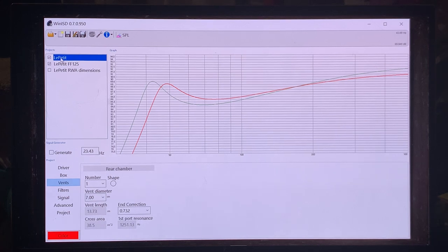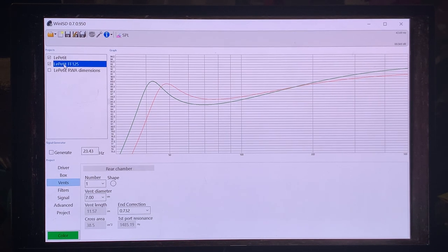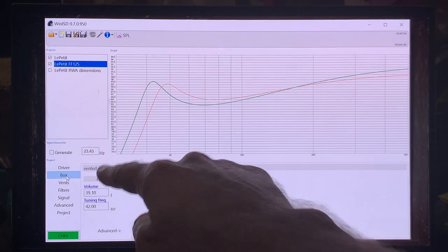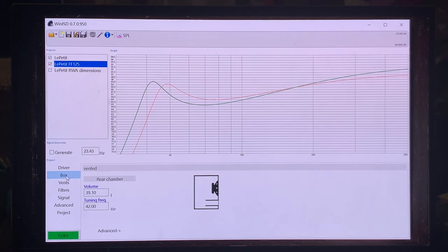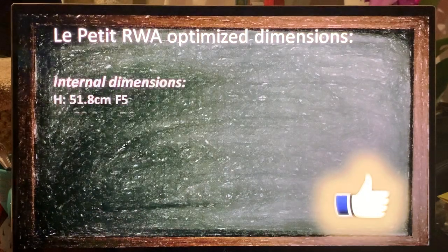So compared to the original Le Petit in red, the FF125 is the green, so you can get a lot more bass out of it. But also you have to observe that we are looking at a slightly larger cabinet. So if you are okay with a slightly larger cabinet, then with this driver you can get a lot deeper bass than the standard Hiraga cabinet. But if you want the exact same size, then it will work just as well as the original FE103 Sigma did.